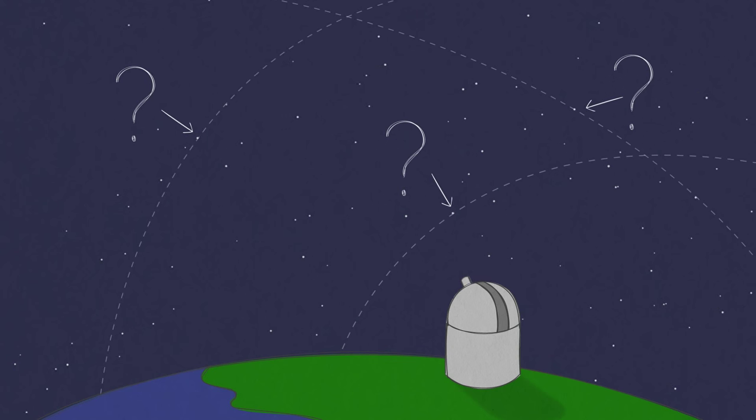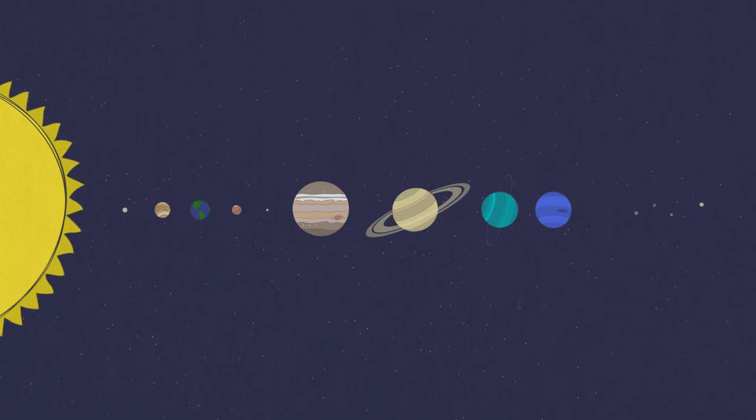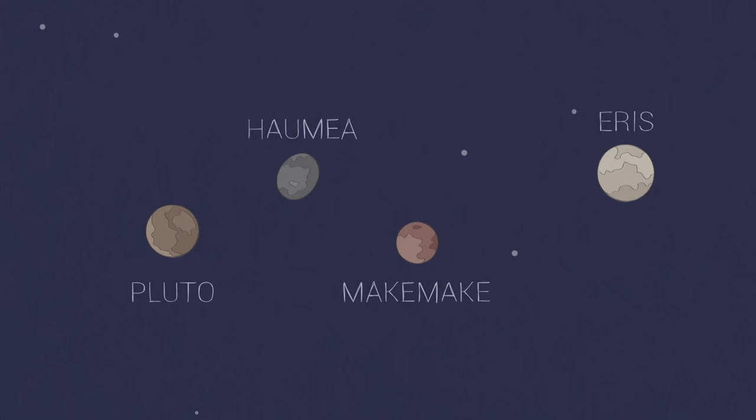There may be dozens of dwarf planets in our solar system. So far, we've classified just a handful, most of them very far away.